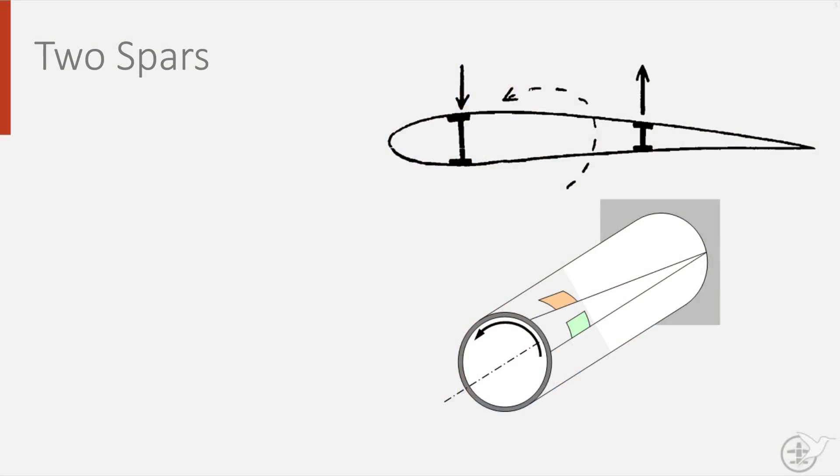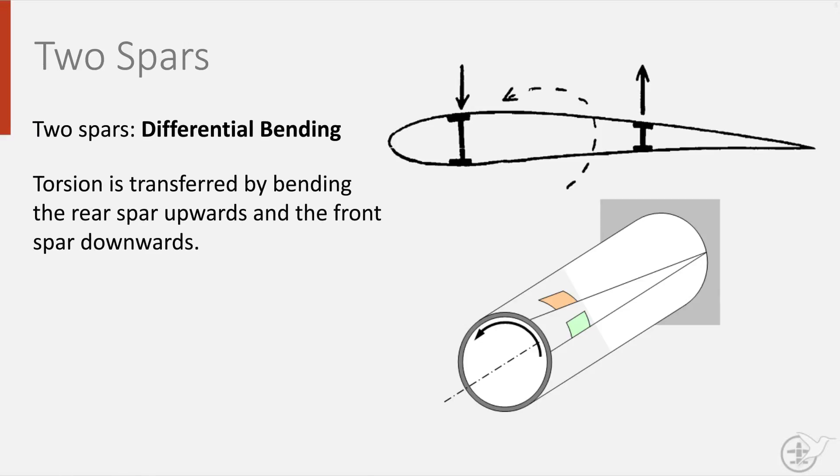But what happens is that due to torsion, differential bending takes place, with the rear spar bending upwards and the front spar bending downwards. The spars already have a good resistance against bending.